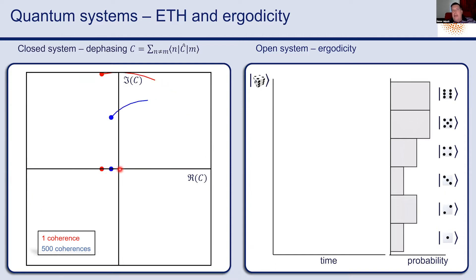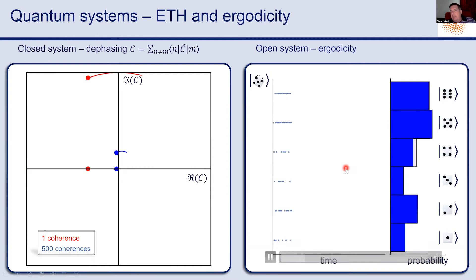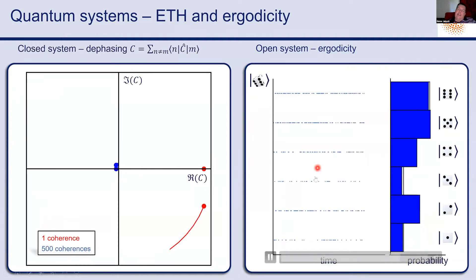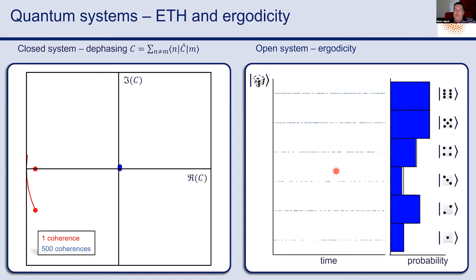For an open system, ergodicity predicts that in most cases the system becomes stationary after running for a sufficiently long time — illustrated by a loaded die, where after enough throws we get a stationary distribution of outcomes. These two behaviors — eigenstate thermalization in closed systems and ergodicity in open systems — are completely contrary to the complex classical dynamics we see around us where things do not thermalize.